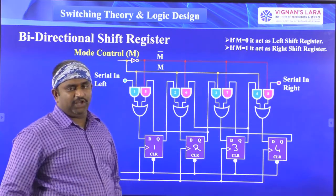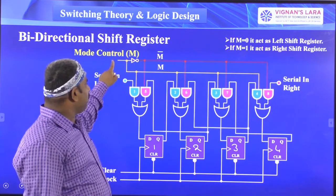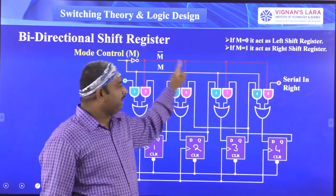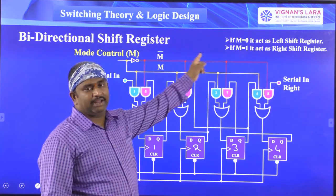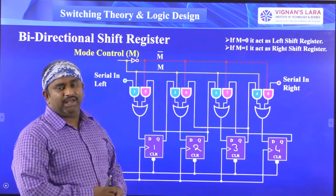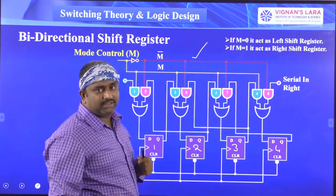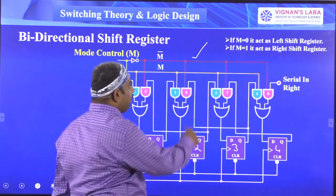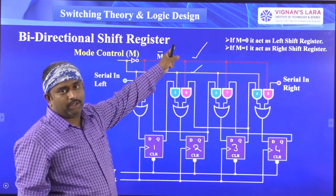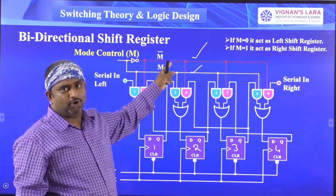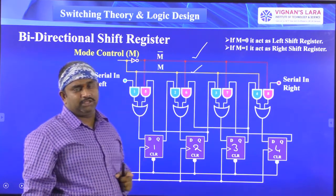These are the four flip-flops. The mode control signal is present — the yellow lower line is M and the upper line is M-bar. Whenever M is equal to 0, the upper line M-bar goes to 1 and is active. Whenever M is equal to 1, the lower line goes to 1. If the upper line is 1, the lower line is 0, and vice versa.